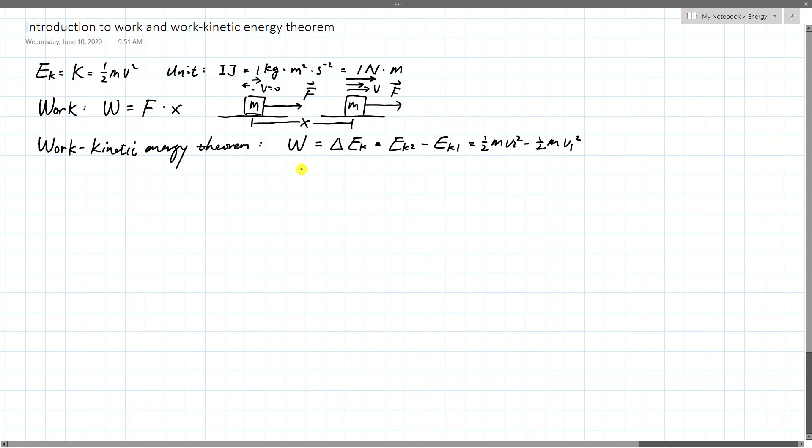So what this theorem can tell you is basically how much kinetic energy can you give to an object. You can observe the change of kinetic energy, and then you can infer how much work is done. So let's try to expand work a little bit, because this is a very simple situation where there's only one force. One force, and there's a displacement. This is how much work is done by that force.